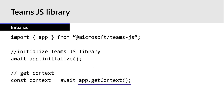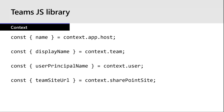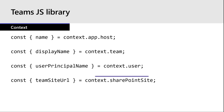After the library is initialized, you can start using functions on these capabilities. A common starting point is getting the context of your app by calling the get context function. Context provides lots of useful information: information about the host where your app is running — whether it's the Teams web client or desktop — the context of the team itself, the current user information, and the underlying SharePoint site that backs that team.